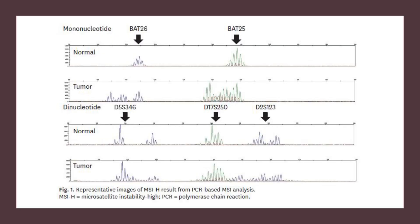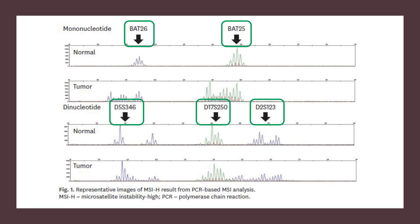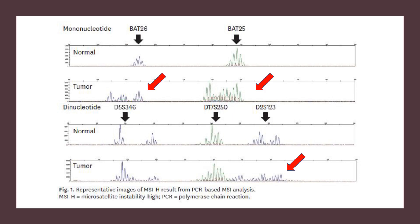MSI status was assessed by PCR testing using a National Cancer Institute panel of five markers. The five markers include two mononucleotide markers BAT-26 and BAT-25, and three dinucleotide markers D5S346, D17S250, and D2S123. Microsatellite status was determined through differences in the allele profiles of normal tissue and gastric cancer cells. MSI-high was defined as the presence of two or more NCI markers with unstable peaks.